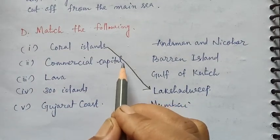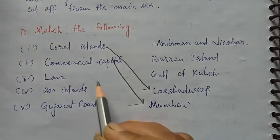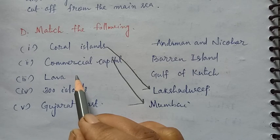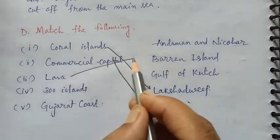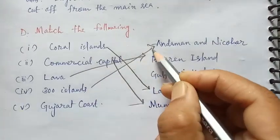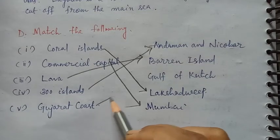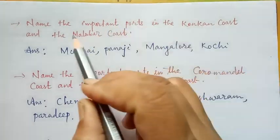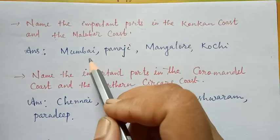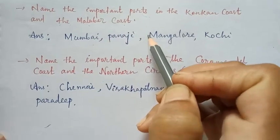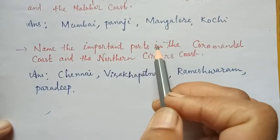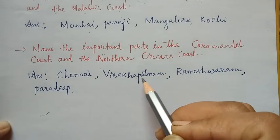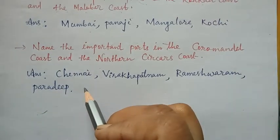Match the following: a coral island is Lakshadweep. The commercial capital of India is Mumbai. Lava is the hot liquid ejected from a volcano eruption, related to Barren Island. 300 islands refers to Andaman and Nicobar. Gujarat coast is the Gulf of Kutch. Important ports on the Konkan and Malabar coasts are Mumbai, Panaji, Mangaluru, and Kochi. Important ports on the Coromandel and Northern Circar coasts are Chennai, Visakhapatnam, Rameswaram, and Paradip.